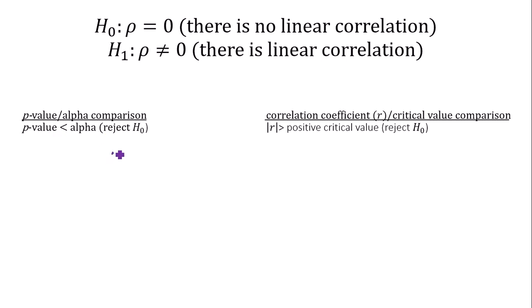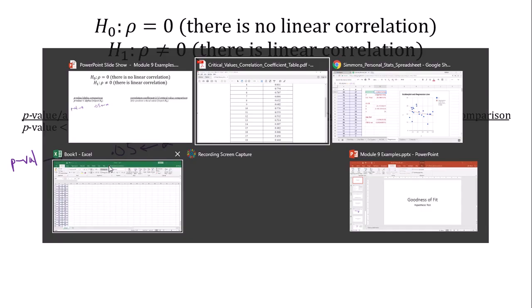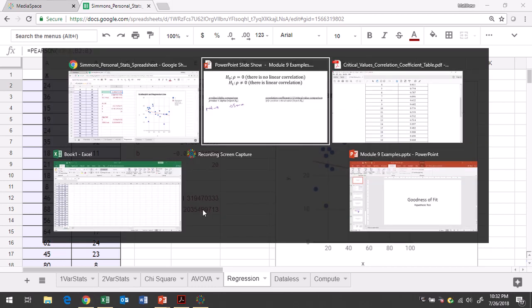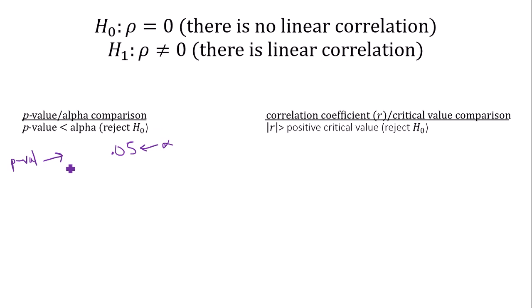I know alpha is 0.05. The p-value is, they give this to you in your Google Sheets, so it's not that hard to find. The p-value is about 0.2035. And it's clear to me that the p-value is definitely greater than alpha. Since it's greater than alpha, we will fail to reject the null hypothesis.